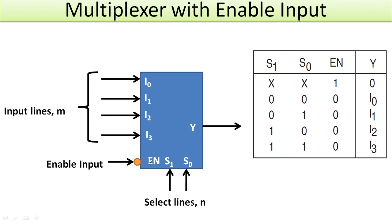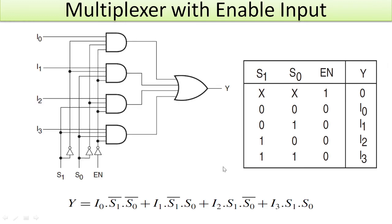So how to achieve this? We all know that this is the equation for a 4:1 multiplexer, and we have to introduce an additional control into the circuit.